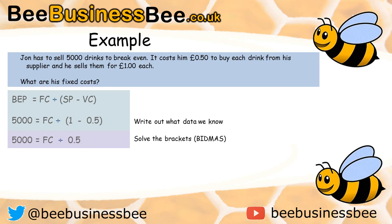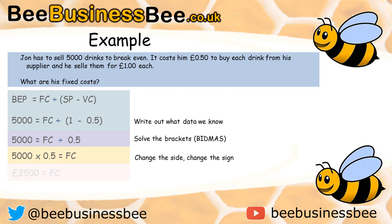Look at how I'm writing it all out in a nice structured way. We're now going to use one of the basic principles of algebra. We want to find FC. We know to leave FC on that side where it is, we need to get rid of that divide by 0.5. The opposite of divide is times. So if I move my divide by 0.5 to the other side, that will leave me with 5,000 times by 0.5 equals FC. 5,000 times 0.5 gives me £2,500, which equals my fixed cost.